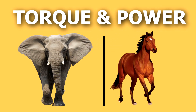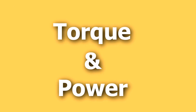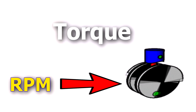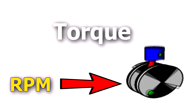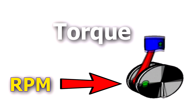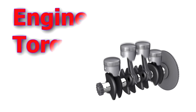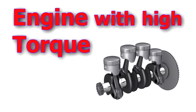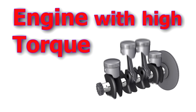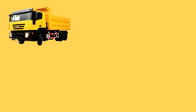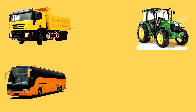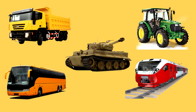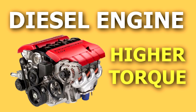In the first segment we will understand the basic explanation of torque and power. Torque is dependent on the rotational force produced by an engine piston, or specially known as RPM — that is revolution per minute. An engine with higher torque has the ability to pull heavy loads. For example, vehicles such as trucks, buses, tractors, trains, and battle tanks are designed for higher torque. Diesel engines are specially made for higher torque.